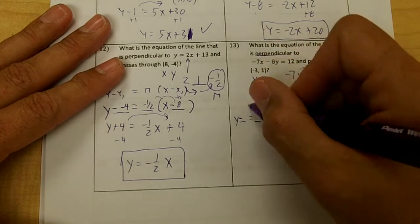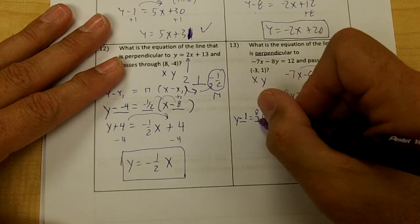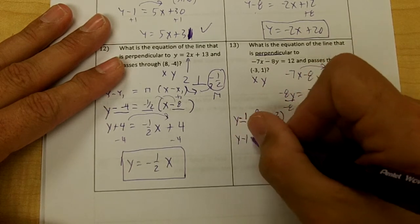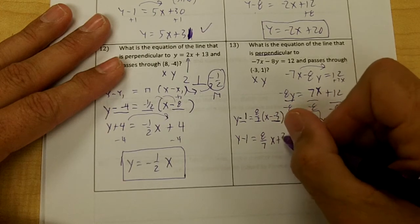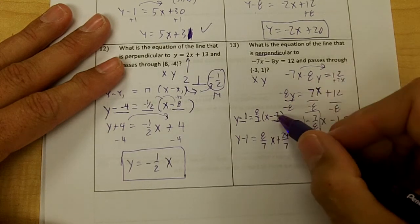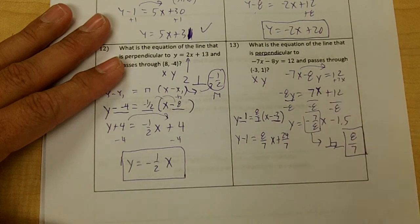So we're going to replace our y with 1 and our x with negative 3, and our slope is 8 over 7. So y minus 1 equals 8 over 7x plus 24 over 7. If you multiply 3 times 8 over 7, you get 24 over 7, and the two negatives will make a positive.